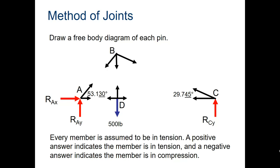We had a bridge truss with five members: AB, BC, CD, BD, and AD. It's a pretty simple bridge — a couple of triangles. We had a force at D of 500 pounds, and we went and calculated RAx, RAy, and RCy in the last video. We also calculated the two angles: 53.13 degrees and 29.745 degrees.